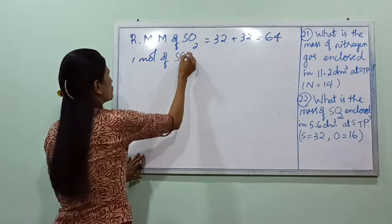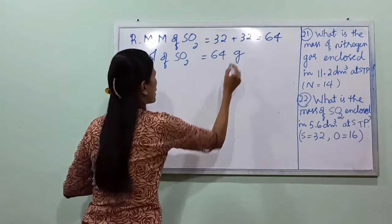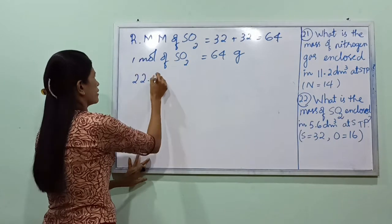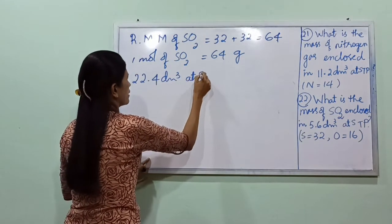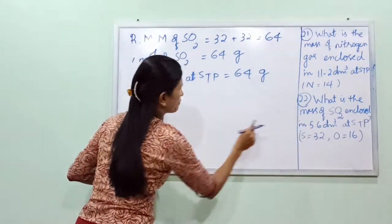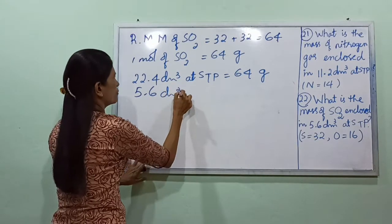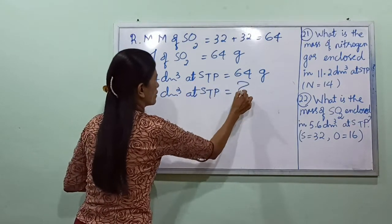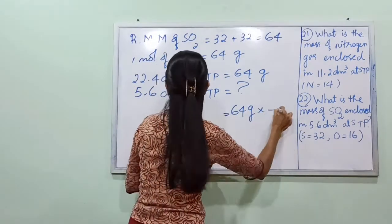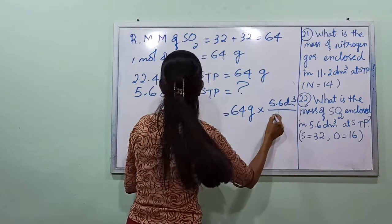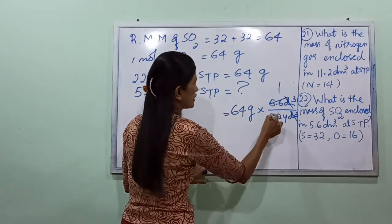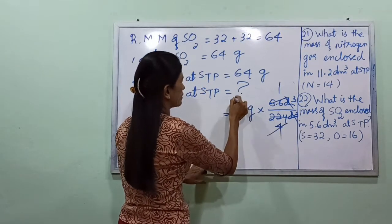One mole of SO₂ is 64 grams. Using the formula: mass of SO₂ equals 64 grams multiplied by 5.6 dm³ divided by 22.4 dm³.